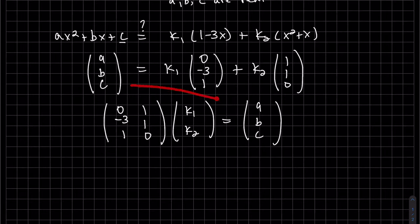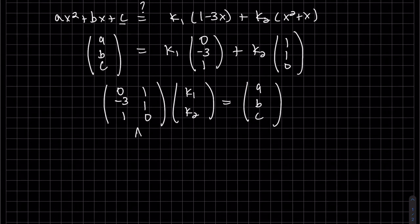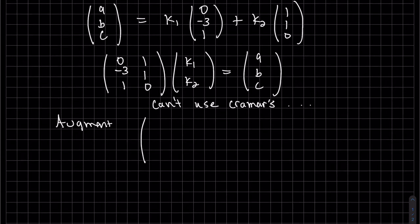Just flip-flopping these sides. We can't use Cramer's because A is not a square matrix. So we have to augment.